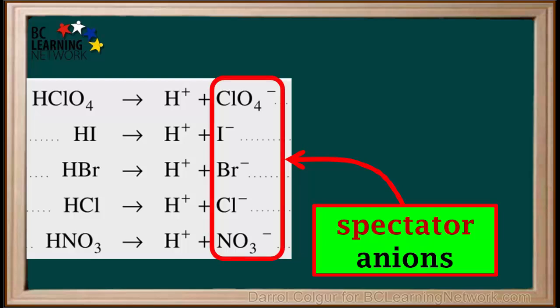So the spectator ions are ClO4-, I-, Br-, Cl-, and NO3-. It would be useful to memorize these, or at least remember that they are the top five ions on the right side of the acid table.